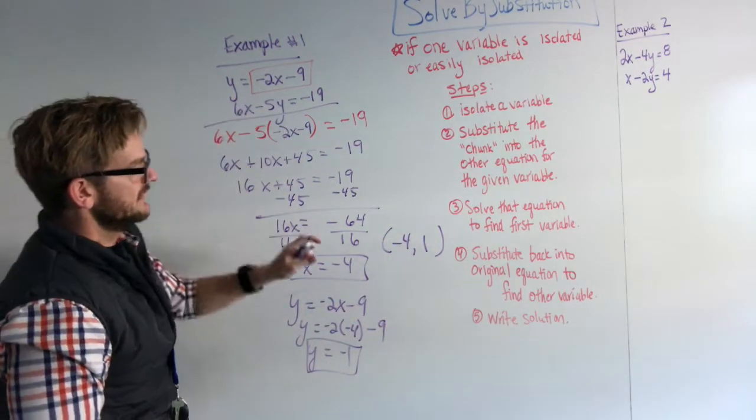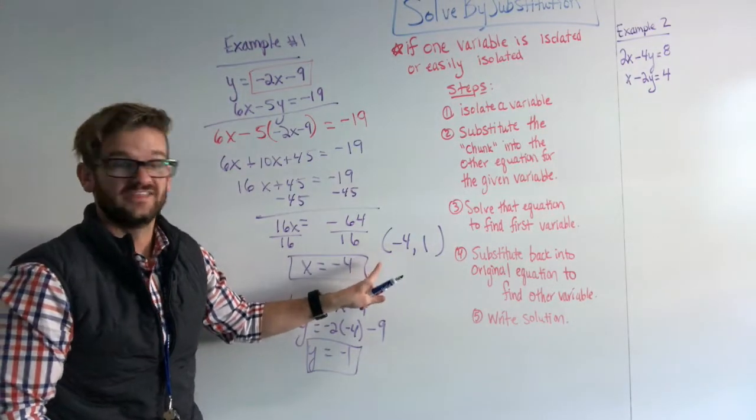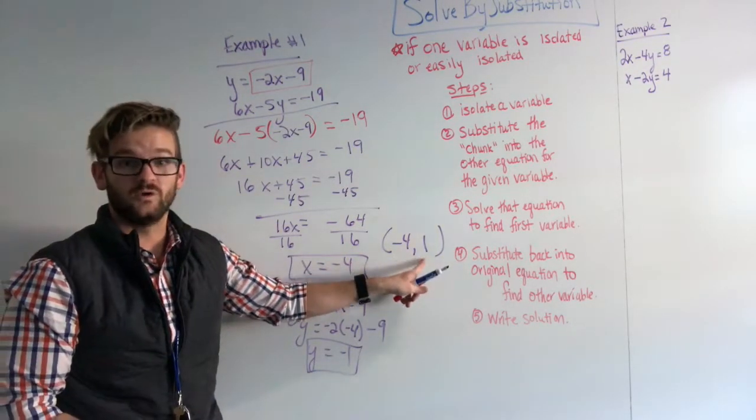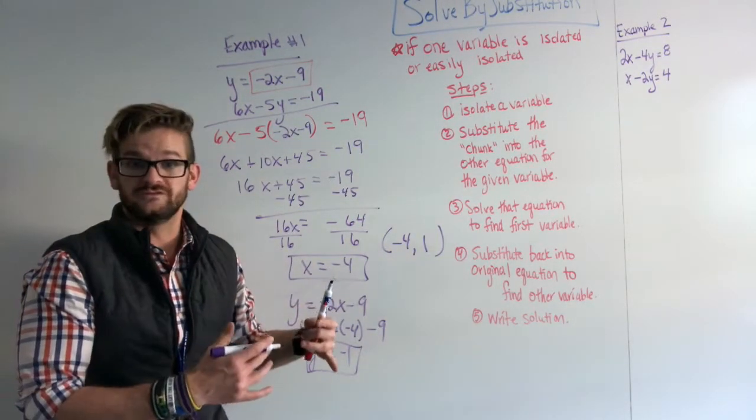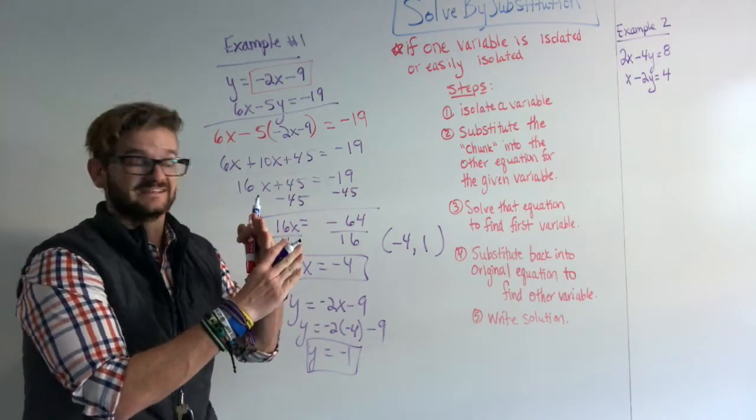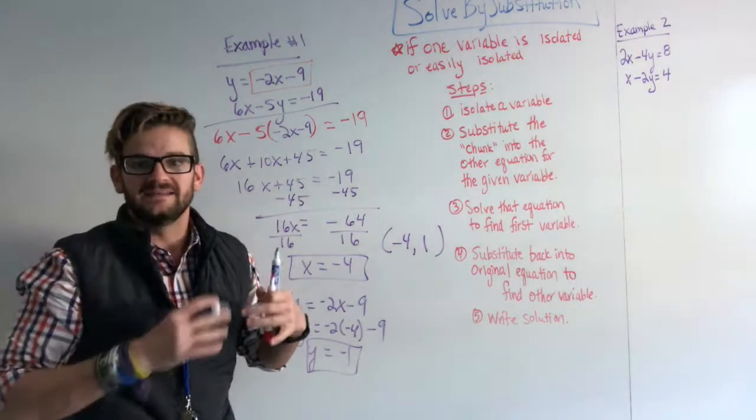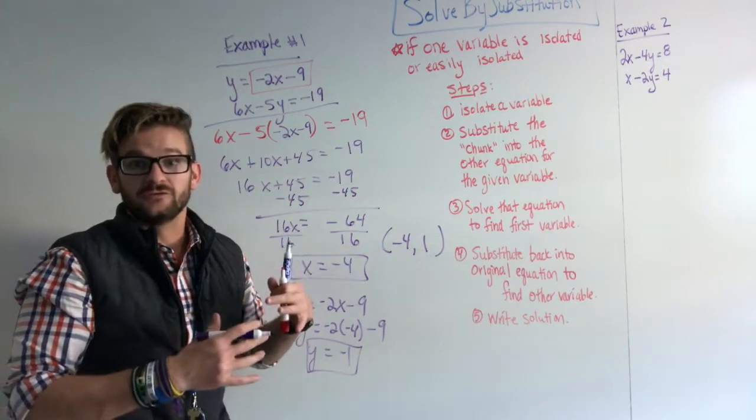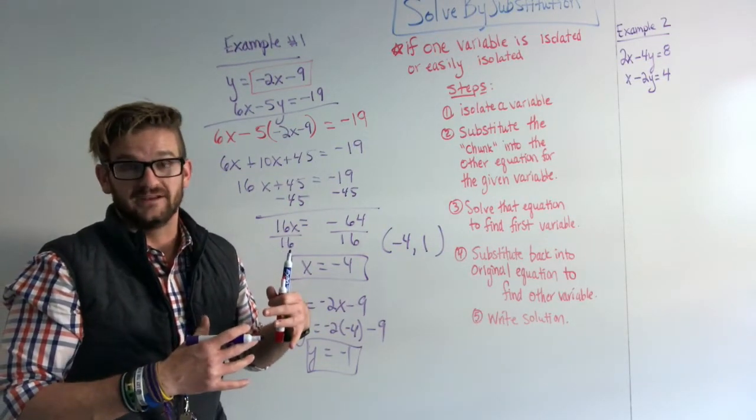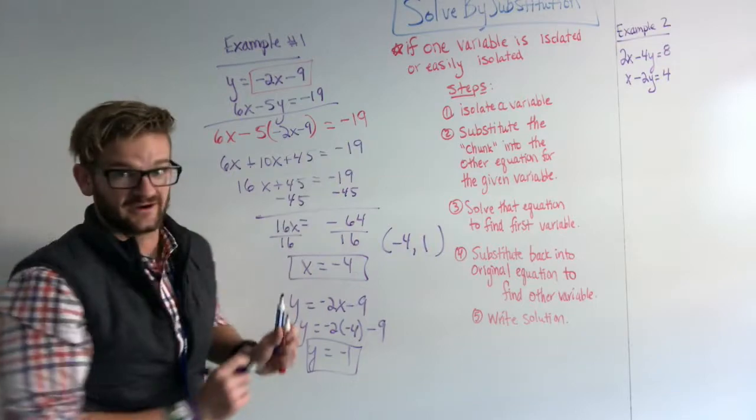When we would graph these two lines, the point of intersection, the shared point, is negative 4, negative 1. That is when it has one solution, two lines intersecting at a certain point. That will happen quite often. However, there's another situation that can happen and we're going to talk to that, and that will come up in our example two.